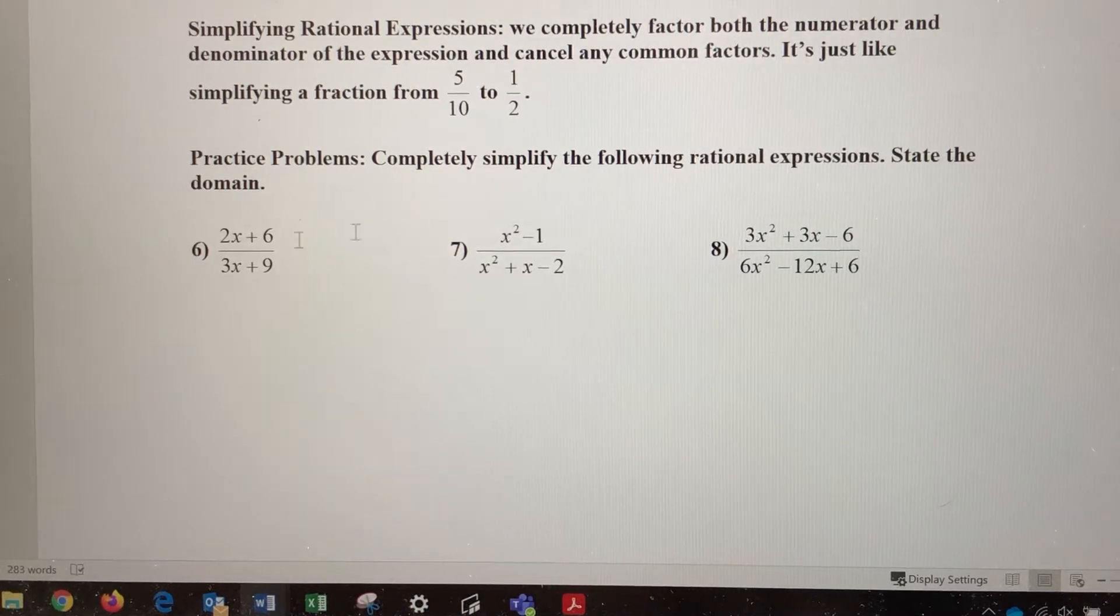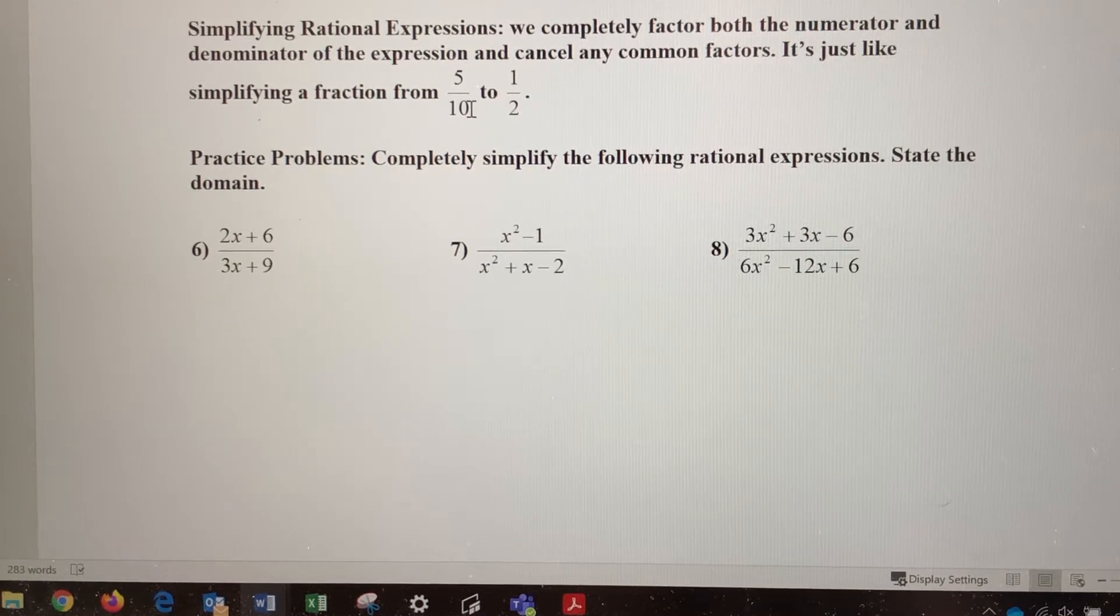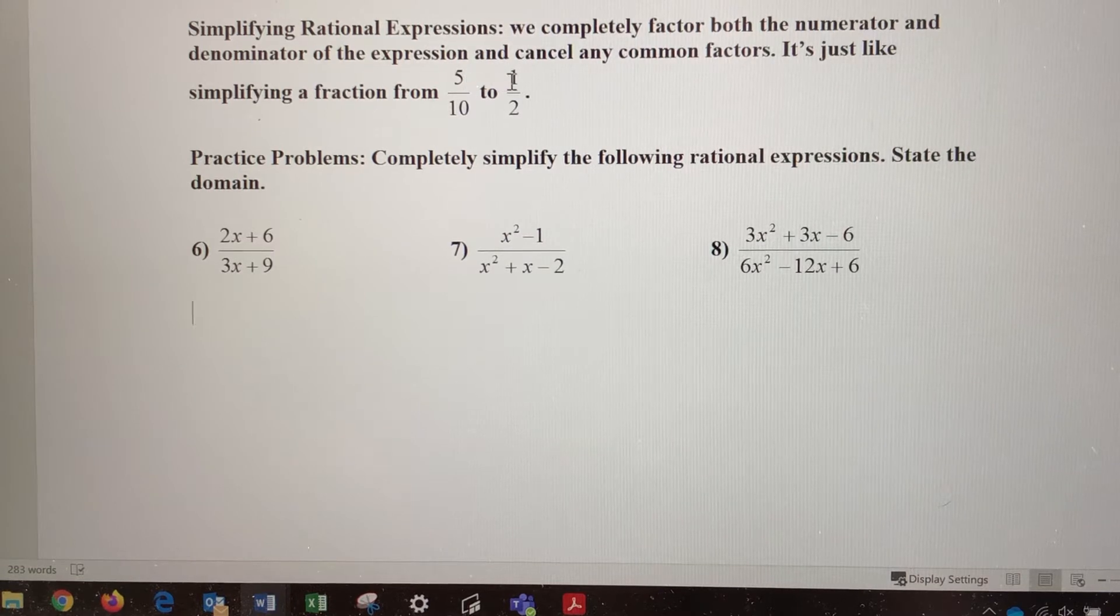So the first thing we want to do, we want to treat these just like fractions. 5 tenths, you can think of, well, 5 and 10 are both divisible by 5, so I can simplify that by dividing the numerator by 5 and getting 1, and dividing the denominator by 5 and getting 2. So 5 tenths is a fractional expression here, but it can be simplified to 1 half.